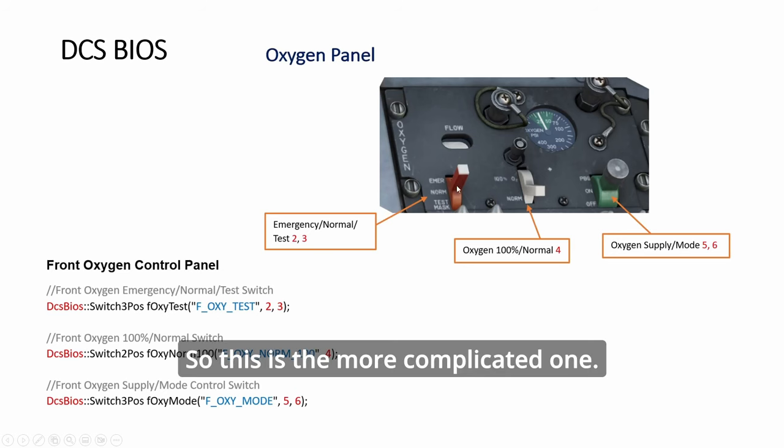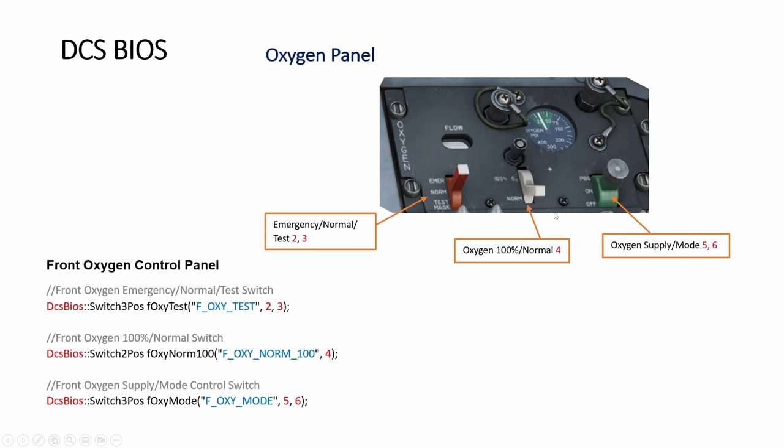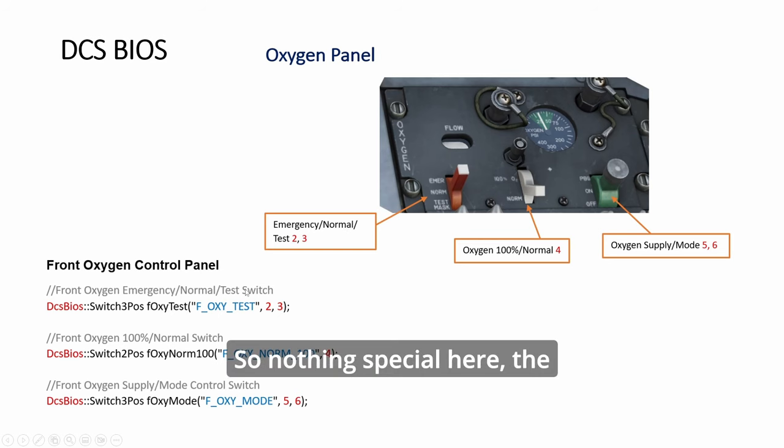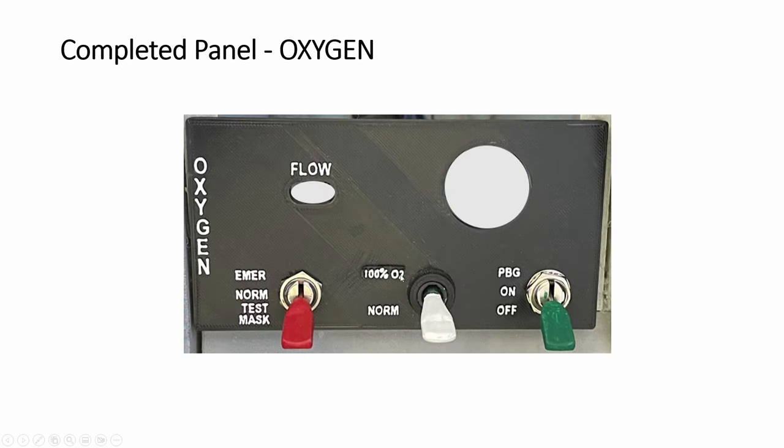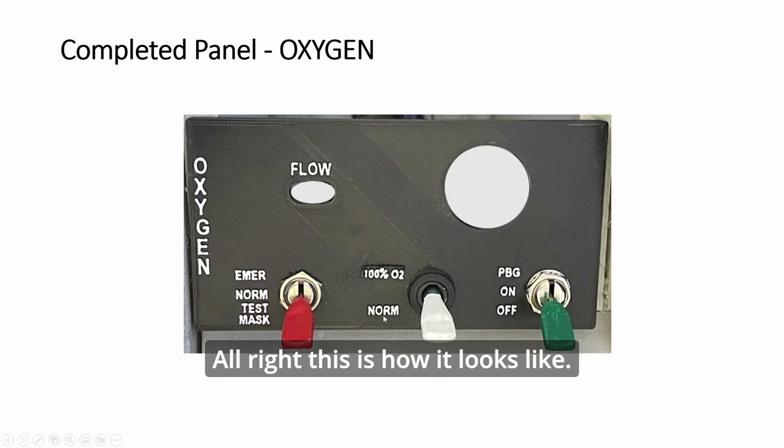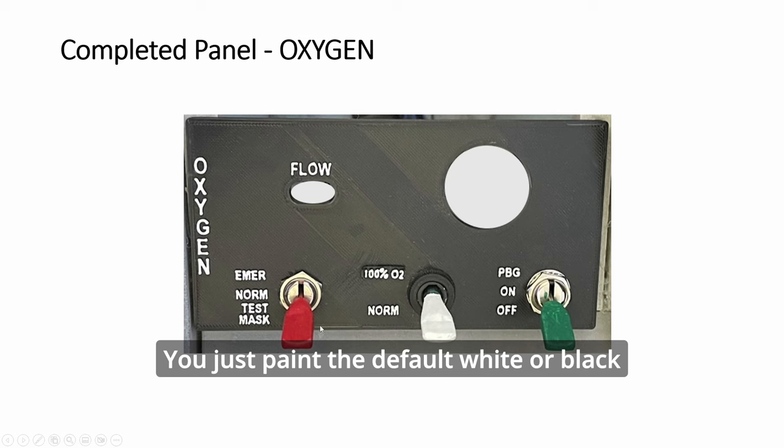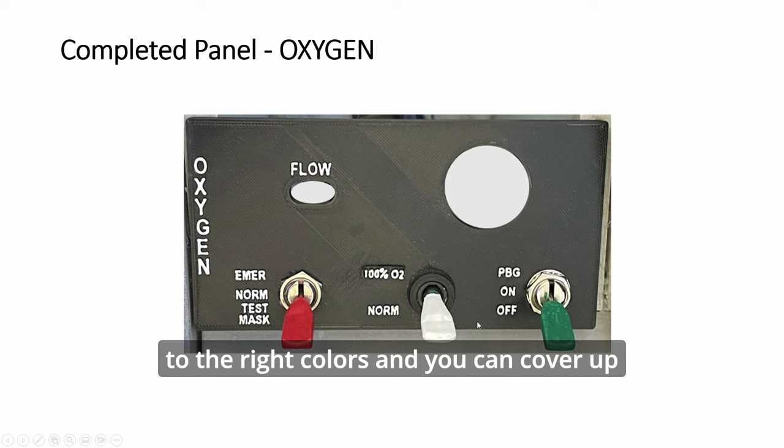So this is the more complicated one. Nothing special here, the code is very straightforward. Alright, this is how it looks like. You just paint the default white or black to the right colors and you can cover up this if you don't want to see the bottom.